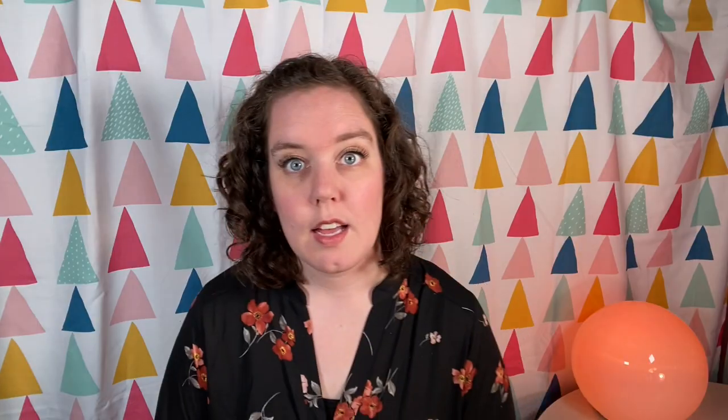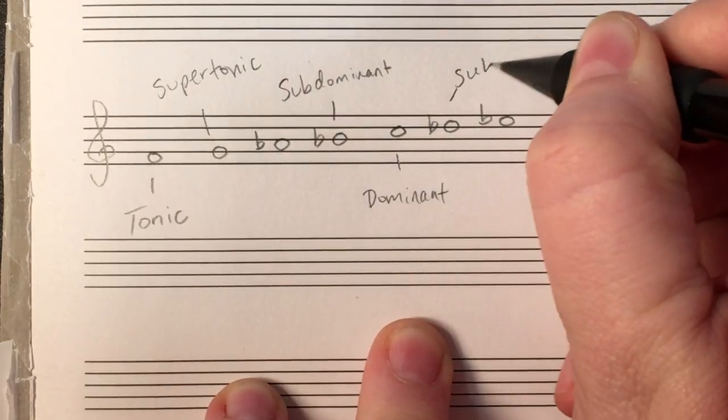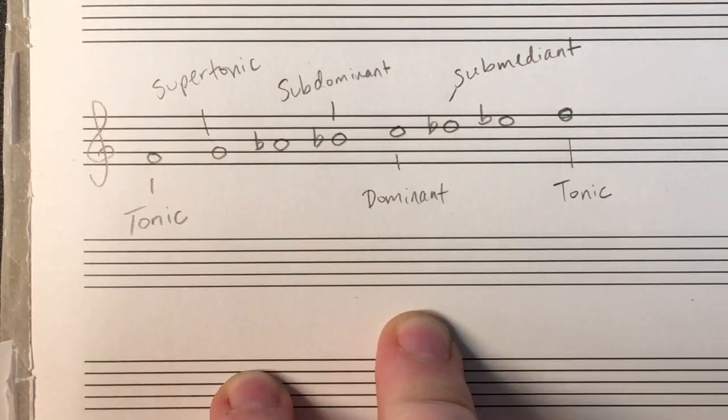A few other things are the same. Two is still called supertonic, as in above tonic. Six is still called submediant. Three is still called mediant.